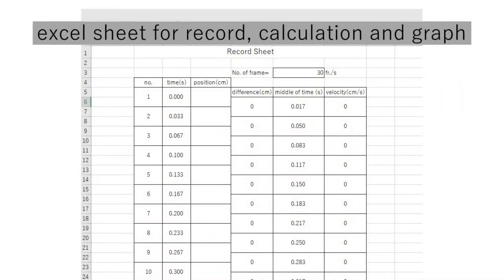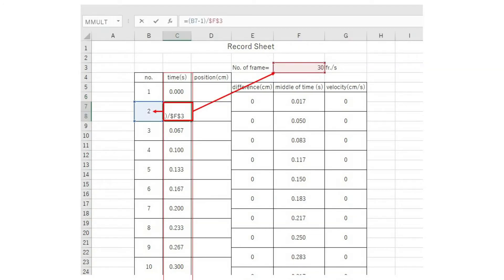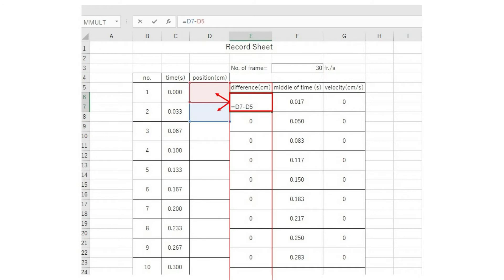Let's make an Excel sheet for record, calculation, and graph. Each frame time is calculated by the number of frames per second. The difference is the length from one frame to the next.